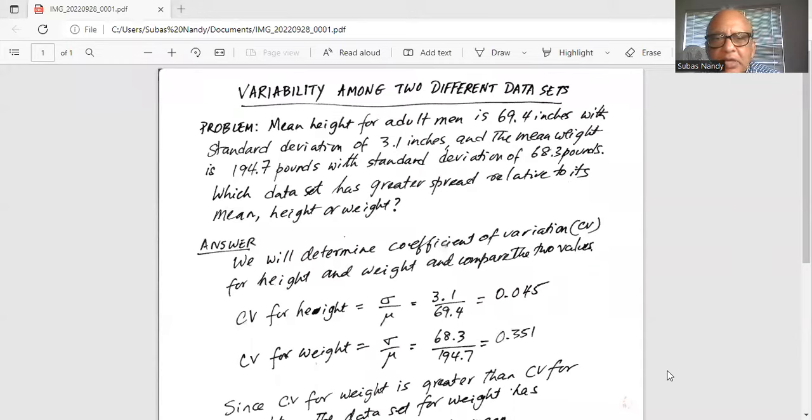Mean height for adult men is 69.4 inches with standard deviation of 3.1 inches. And the mean weight is 194.7 pounds with standard deviation of 68.3 pounds.